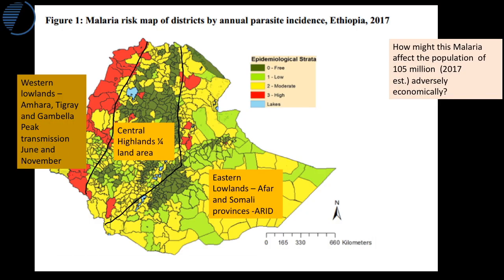To recap: the western lowlands include the provinces of Amhara, Tigray, and Gambella, with peak transmission from June to November. The central highlands represent about a quarter of Ethiopia's land area with virtually no malaria. In the eastern lowlands — the Afar and Somali provinces — conditions are arid and simply too dry for transmission most of the year. In rare storms, stagnant pools can form and malaria can spread to those regions, but most of the time it's not found there.